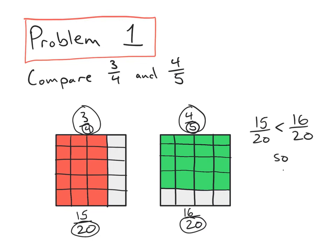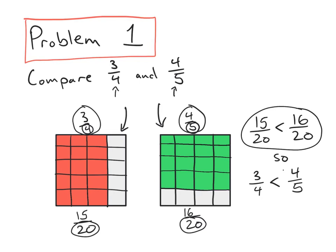So three-fourths is less than four-fifths. To summarize the strategy from problem one: we had two fractions that we couldn't change to have the same numerator or denominator, so we changed both of them into twentieths. We showed that decomposition with an area model, and that allowed us to compare the two fractions, giving us our answer that three-fourths is less than four-fifths.